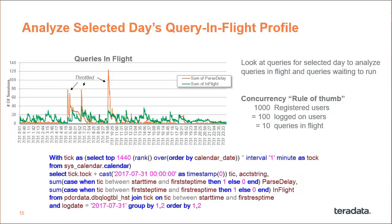In one particular case, several thousand users produced about 20 queries in flight at one time, with a couple of peaks that were throttled workloads resulting from batch processing releasing large numbers of queries. You can use a drive table or a real table to give you ticks every minute, then go at the query logging and categorize whether queries were parsing, waiting to run, or in flight based on start time, stop time, first step time, and first response time.